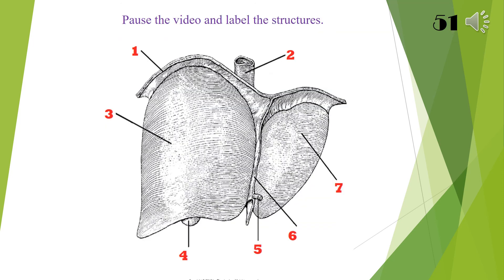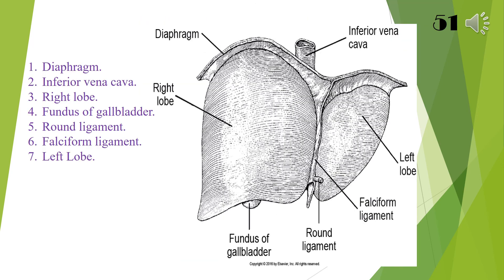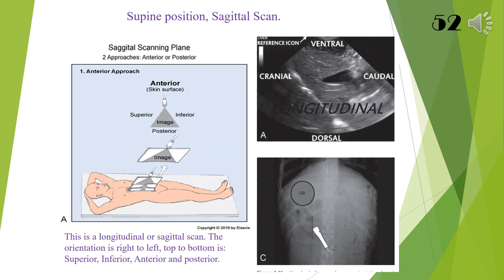Pause the video and label the structures: 1 diaphragm, 2 inferior vena cava, 3 right lobe, 4 fundus of gallbladder, 5 round ligament, 6 falciform ligament, 7 left lobe.